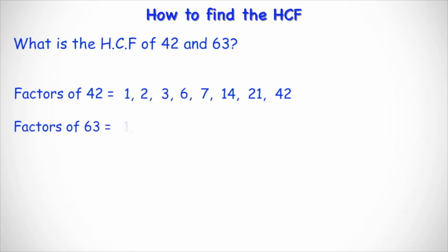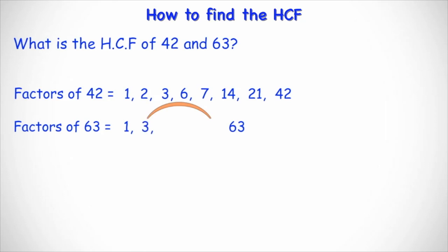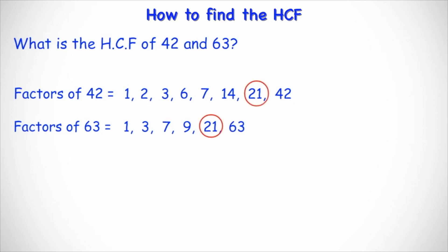Then we do the same for 63. We have 1 and its partner 63. Can 2 go into 63? Not exactly — 63 divided by 2 gives a decimal, so we ignore 2. Can 3 go into 63? Yes — 63 divided by 3 equals 21, so the partner for 3 is 21. Can 4 go into 63? Not exactly. Same with 5 and 6. Can 7 go into 63? Yes — 63 divided by 7 equals 9, so the partner for 7 is 9. That's all the factors of 63. Now checking both lists, 1, 3, and 7 appear in both, but the biggest number common to both lists is 21. So the HCF of 42 and 63 is 21.